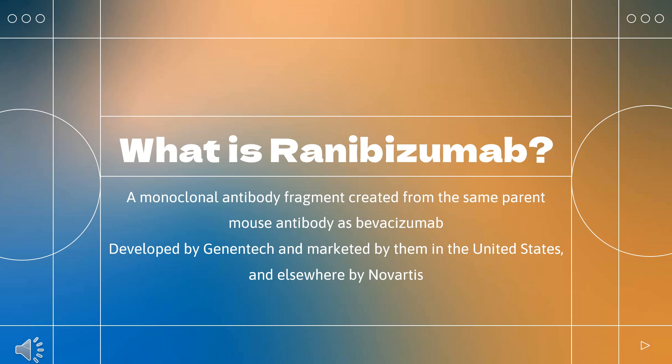Ranibizumab, sold under the brand name Lucentis among others, is a monoclonal antibody fragment created from the same parent mouse antibody as Bevacizumab. Ranibizumab was developed by Genentech and marketed by them in the United States, and elsewhere by Novartis. Lucentis was approved for medical use in the United States in June 2006, and in the European Union in January 2007.